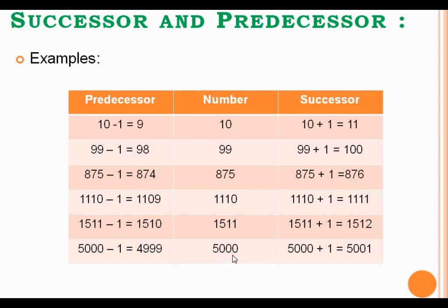The given number is 5000. If you want to find the successor of 5000, you just add 1 to 5000 and you will get 5001, which will be the successor of 5000. And if you want to find the predecessor of 5000, you have to subtract 1 from 5000, so you will get 4999. 4999 will be the predecessor of the given number 5000.